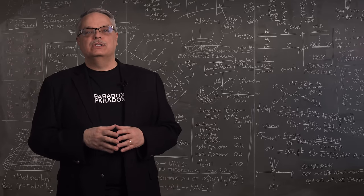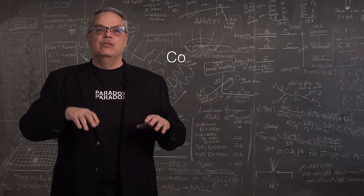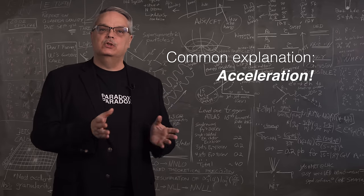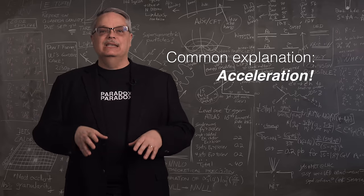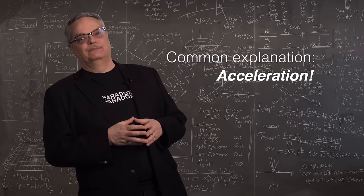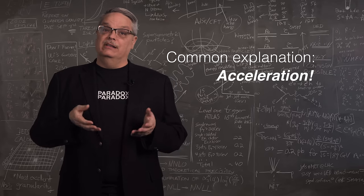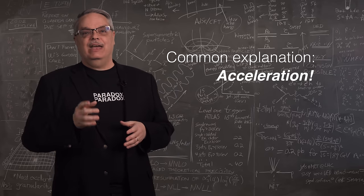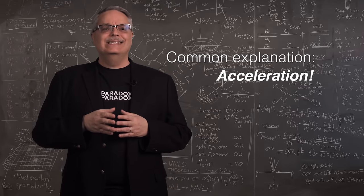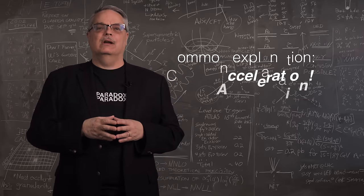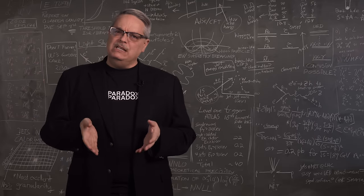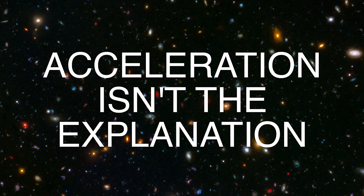Now you'll find many books and videos that will tell you the reason that this isn't a paradox is that there's something that distinguishes between the two observers and the reason is that one of them experiences acceleration and the other one doesn't. Because of the acceleration, Ron and Don have different experiences and that's what people claim is the answer. The problem is that this answer is not fundamentally correct. I mean, it does have some merit and we'll get to that point shortly. But at the deepest level, acceleration isn't the explanation.